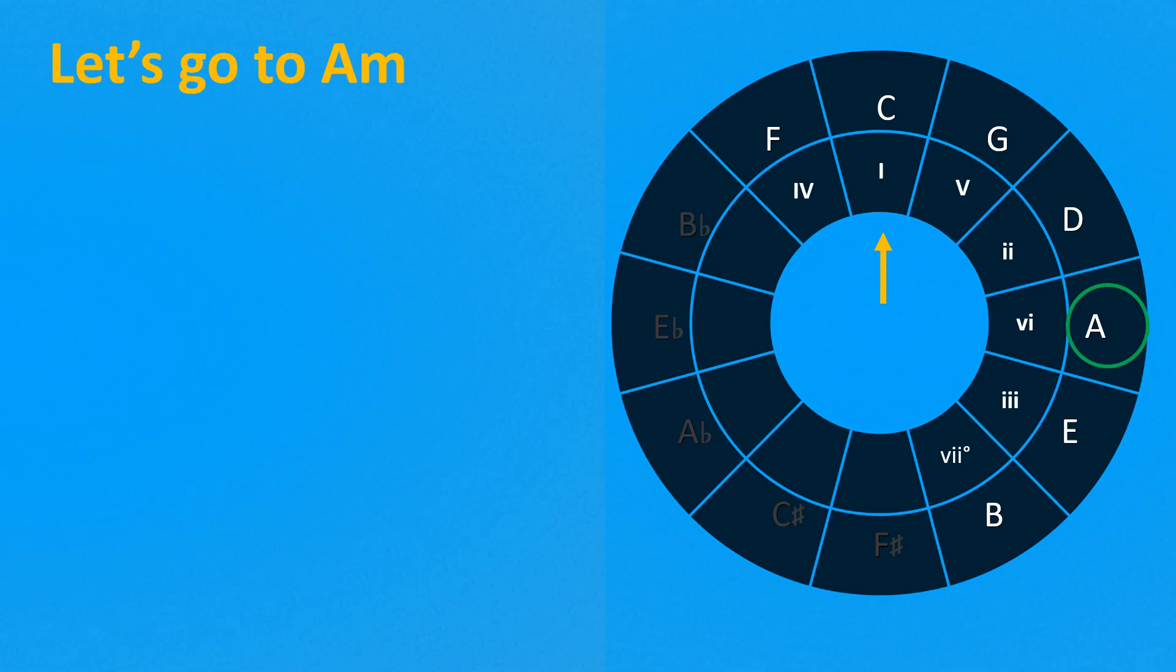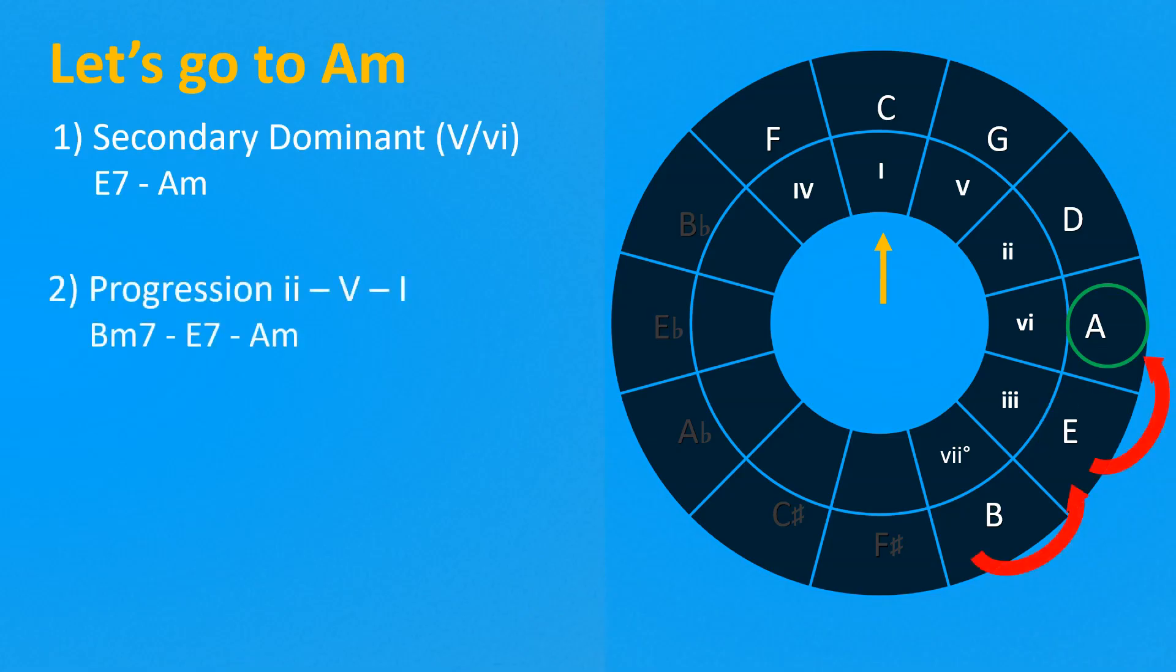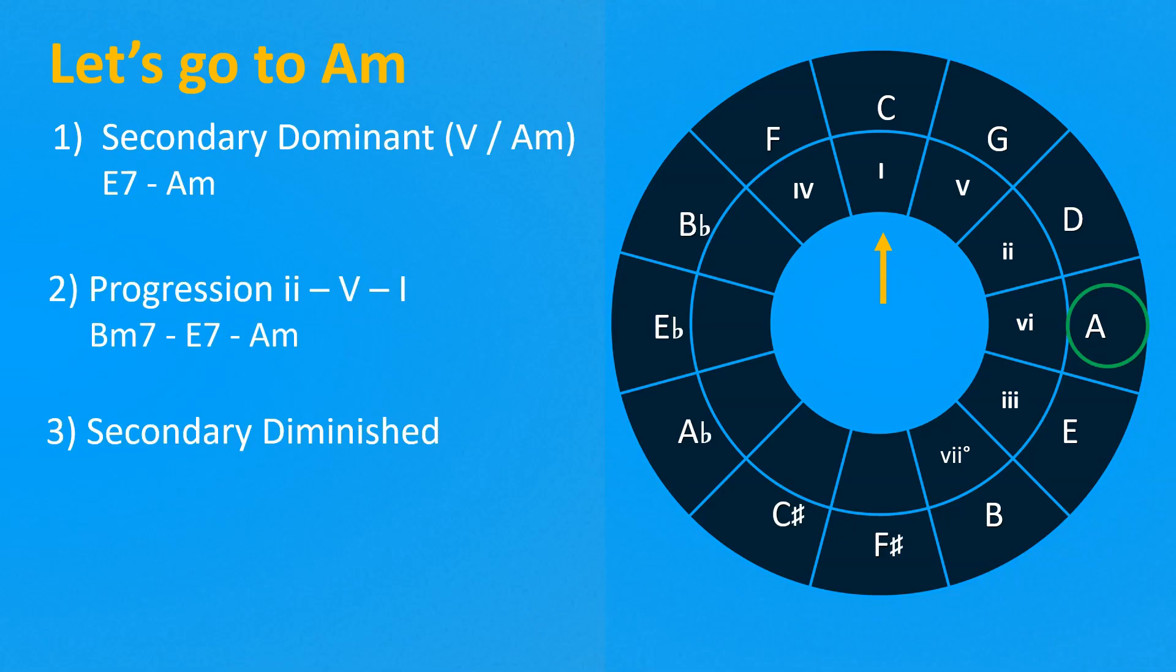Let's do an example. We have a C major scale and we want to go to E minor. We have three great opportunities. The first one is to use a secondary dominant. The second one is to use the progression 2-5-1. The last one is to use a secondary diminished. If we are in C major, we have to think to be in E minor. The diminished chord is G sharp.